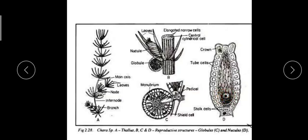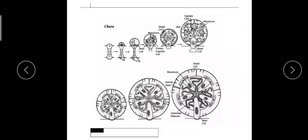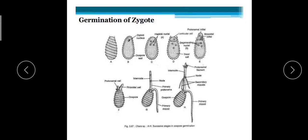At the time of maturity, the tube cells move apart and a slit is formed through which antherozoids can enter the nucule and conduct fertilization. The antherozoids, liberated from the globules, swim through water, approach the nucule, enter through the slit, and fertilize the egg. After fertilization, a diploid zygote is formed, which secretes a wall around it and becomes yellow or brown in color. The oogonium wall becomes thick and develops sculpturings.